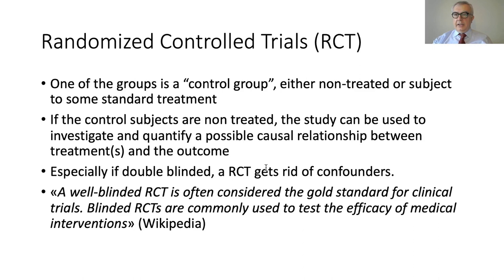In a randomized trial you randomize the subjects, and this is so powerful that it can eliminate all confounders. When you randomize, any confounder will take random values across both groups, so its effects cancel out between the two arms. You should therefore be very cautious before drawing causal conclusions from observational data.